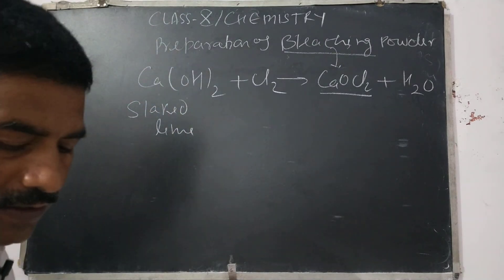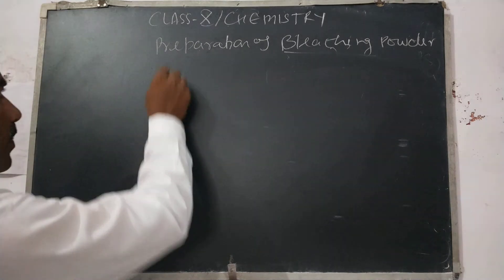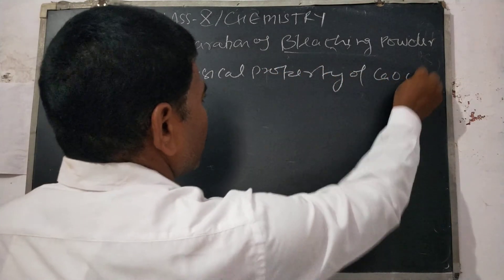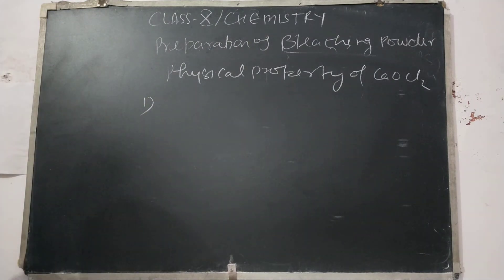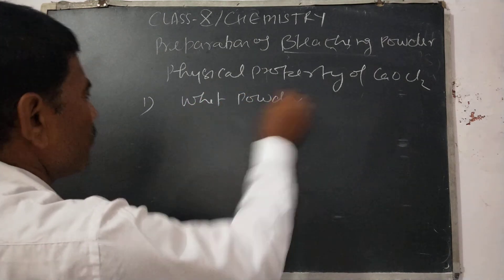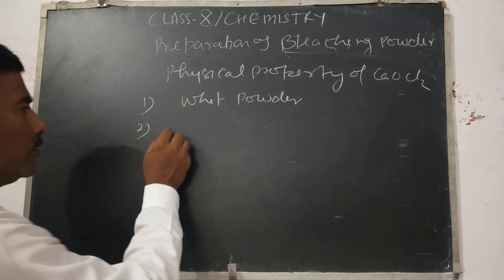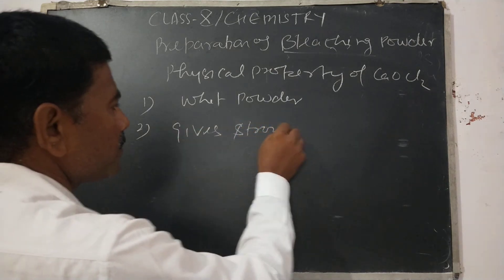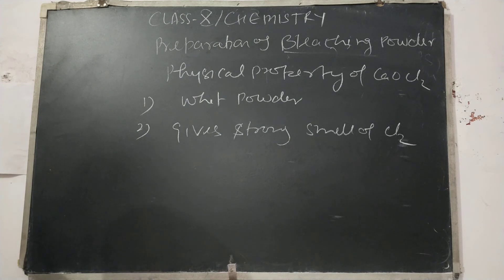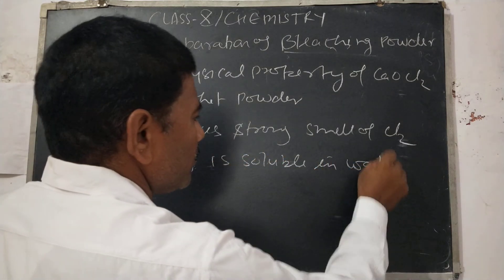Now we will look at the properties of bleaching powder. The physical properties of CaOCl₂ are: first, it is a white powder. Second, it gives a strong smell of chlorine. Third, it is soluble in water.